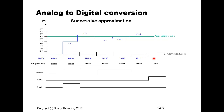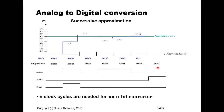This gives the final output code, and an indication signals that the conversion is done, so the output code can now be read. We conclude that the conversion consumed exactly n clock cycles for an n-bit converter, and the time is deterministic — it consumes the same number of clock cycles regardless of the level of the analog input signal.